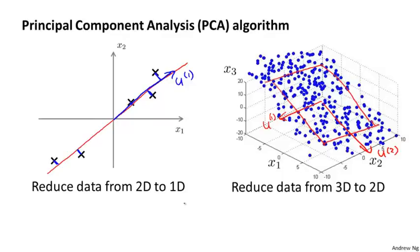Just as a quick reminder of what reducing the dimension of the data means: for the example on the left, we were given examples xi which are in R2, and what we'd like to do is find a set of numbers zi in R with which to represent our data. That's what reduction from 2D to 1D means.